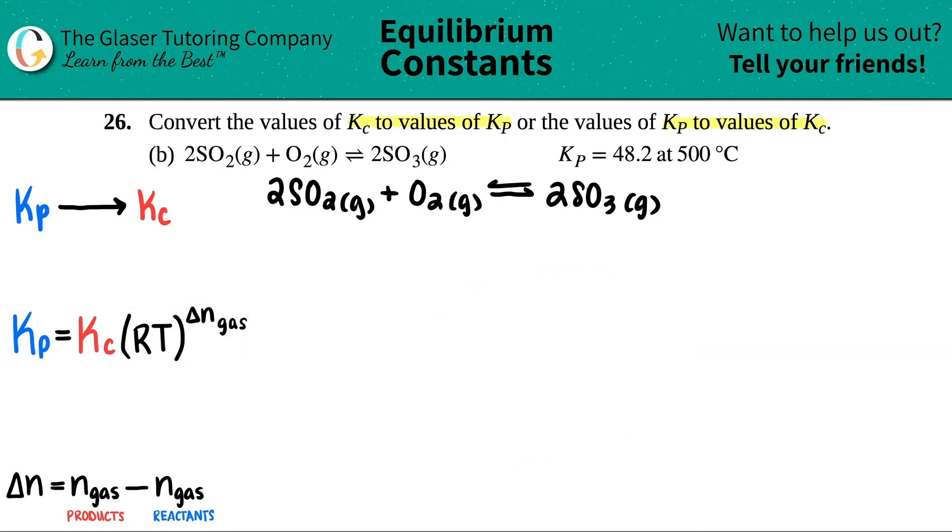So let's work from left to right and fill in all the variables that we know. We know the Kp value. They told me that it was 48.2. So I'm going to say 48.2. We're looking for the Kc. So if you want, you can leave it as Kc, but I'm just going to say it's X because I like to just solve for X. And now we should know the RT and the delta n gas.